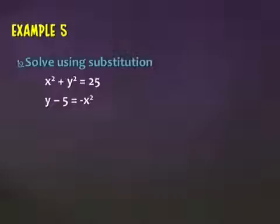All right, you try it. So I've got, again, one equation that represents a parabola and a circle. I've got two squared terms in the top and one in the bottom. So to avoid the expanding and foiling, sometimes you can — and this time we can — if we just solve the bottom equation for x squared.